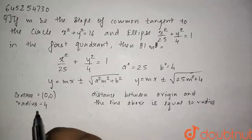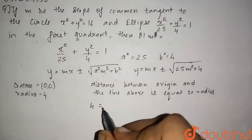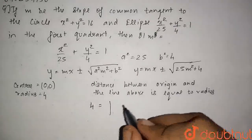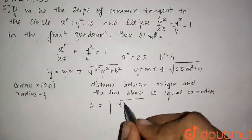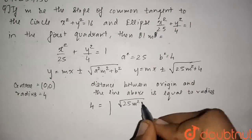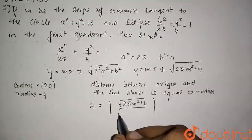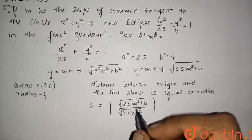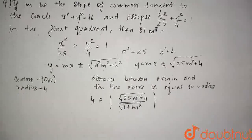The radius equals 4. Applying the perpendicular distance formula with point (0, 0), we get: 4 = |√(25m² + 4)| / √(1 + m²).